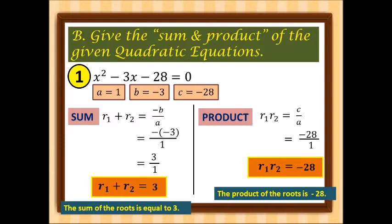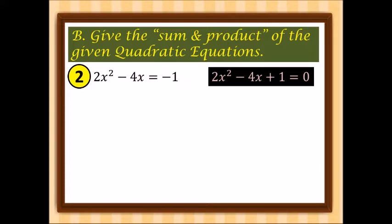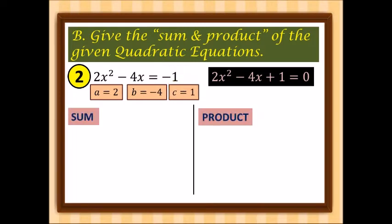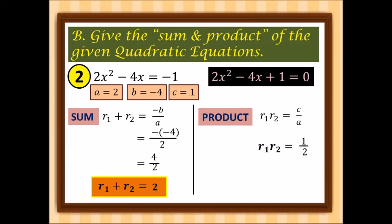Second example, rewritten in standard form: 2x squared minus 4x plus 1 is equal to 0. So a is 2, b is negative 4, and c is 1. For the sum: negative times negative 4 over 2 gives us 4 over 2, so the sum of the roots is 2. For the product: 1 over 2, so the product of the roots is one half.